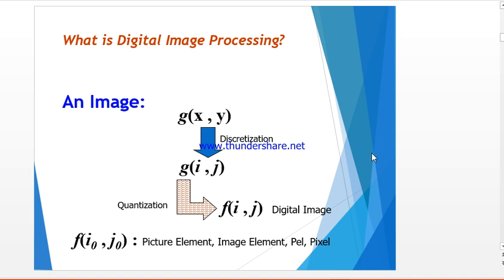To obtain a digital image we have to apply the quantization technique on G(i, j). After quantization, we get the digital image F(i, j), where this digital image is a complete finite as well as discrete quantity.